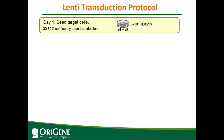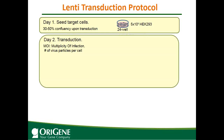The next procedure is the transduction protocol. Day 1: seed your target cells at about 30–50% confluence at the time of transduction. Different cell sizes may require different cell numbers — on a 24-well plate, for HEK293 cells seed about 50,000 cells. Day 2, transduction: first decide what MOI you want to use. MOI, as mentioned, is the multiplicity of infection — the number of viral particles per cell.